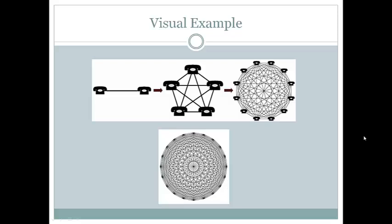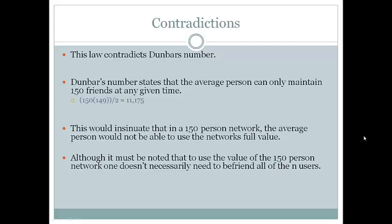If you then add 12 users, you will have 66 connections. 12 times 11 is 132 over 2 equals 66, and it continues to multiply with every additional user that you add within the network.